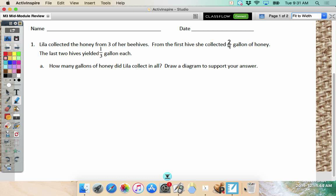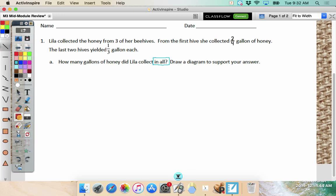Lila collected the honey from three of her beehives. She must be a beekeeper. From the first hive, she collected two-fourths gallon of honey. The last two hives yielded one-third gallon each. How many gallons of honey did Lila collect in all? What should I put a box around here? In all. And it says, draw a diagram to support your answer. So we have a pretty good diagram that we draw, don't we? What's it called? A tape diagram.